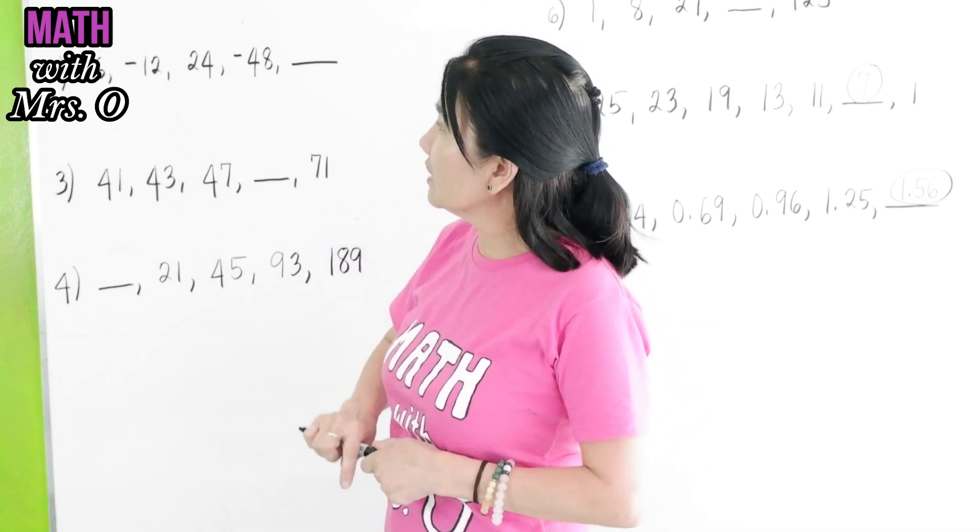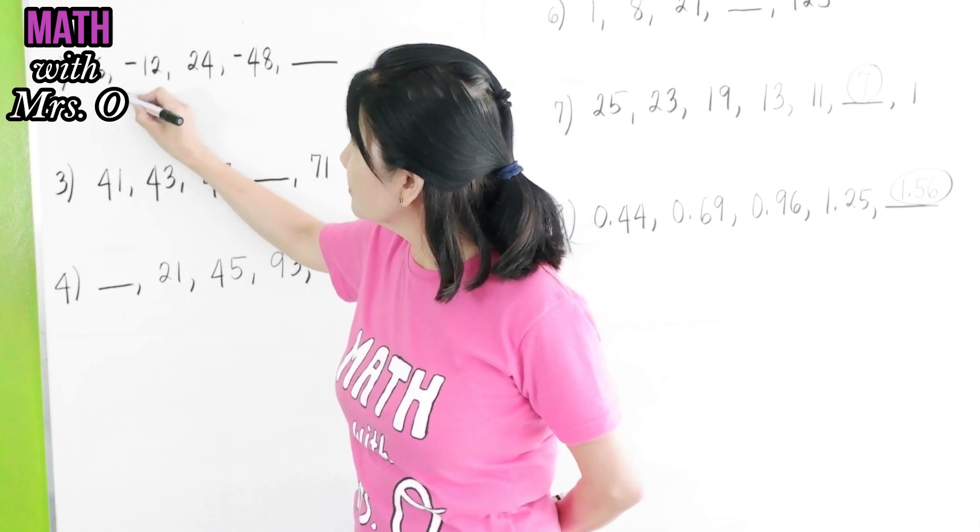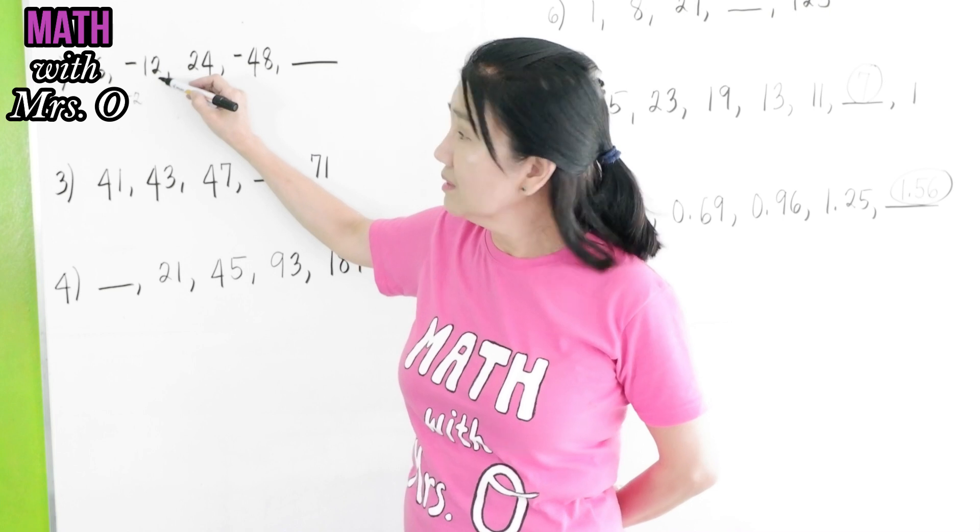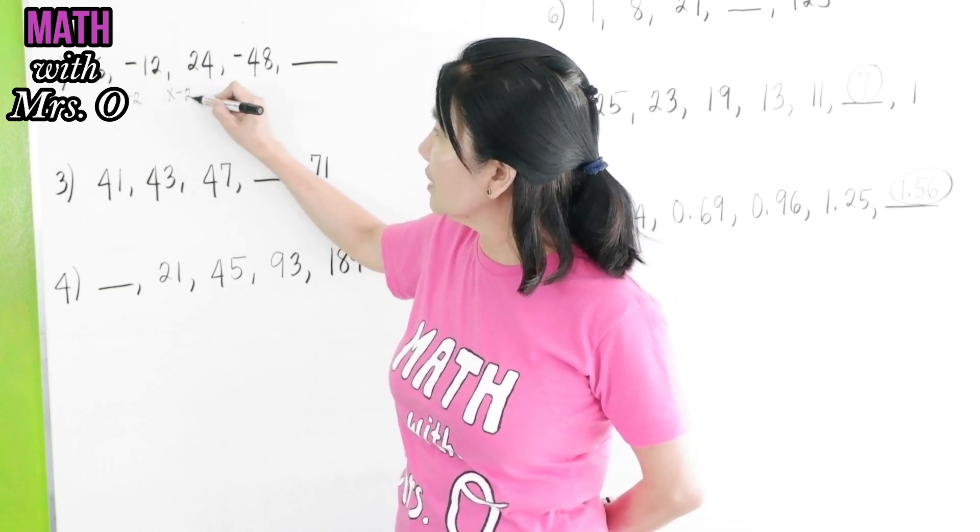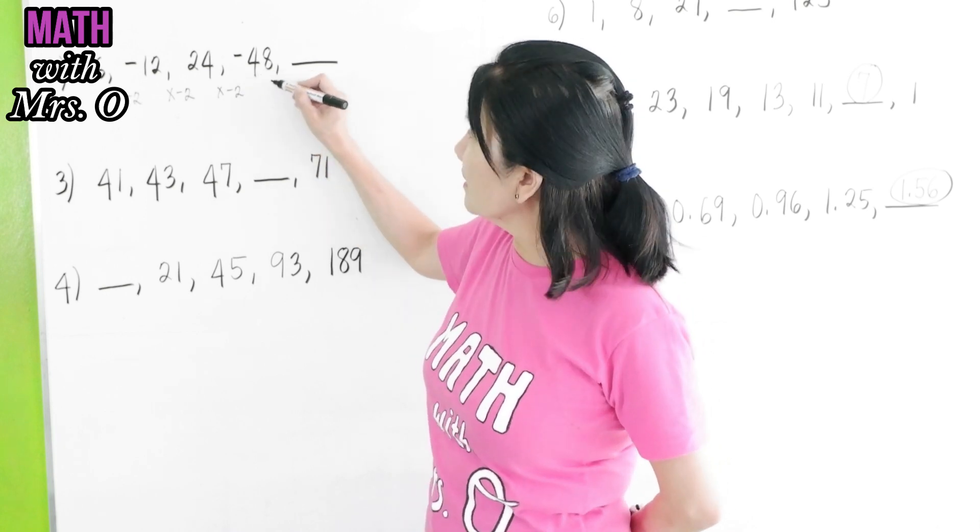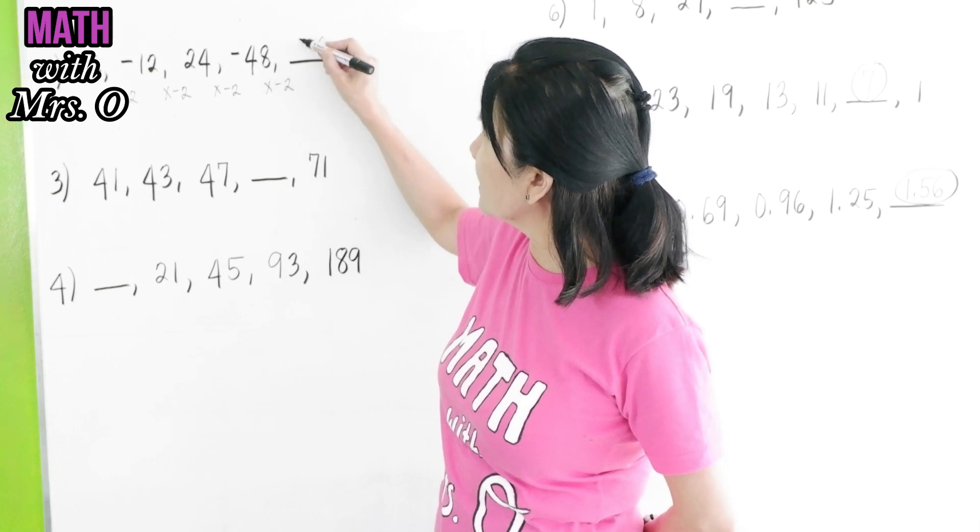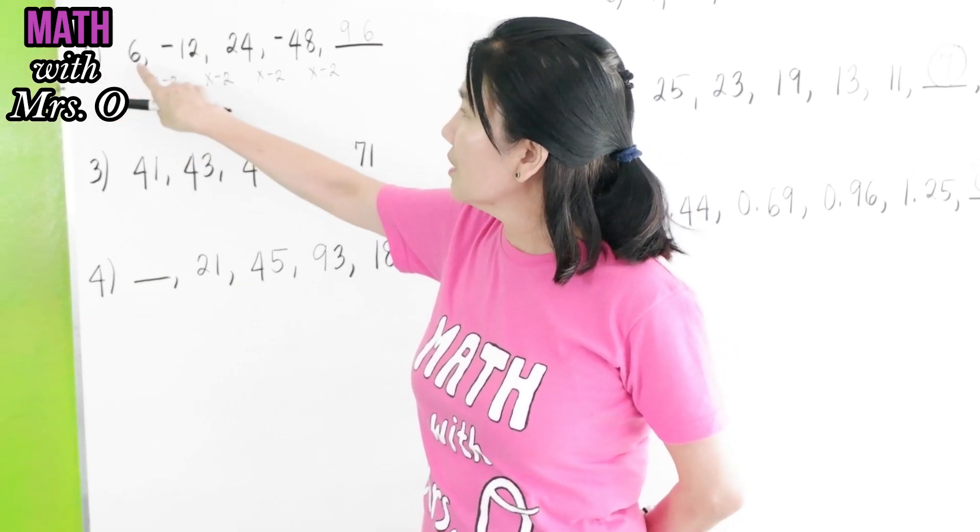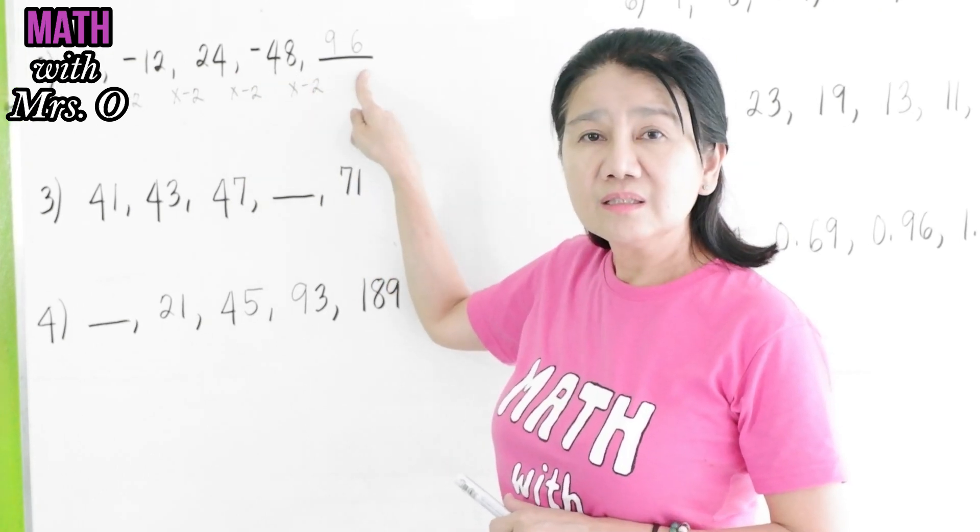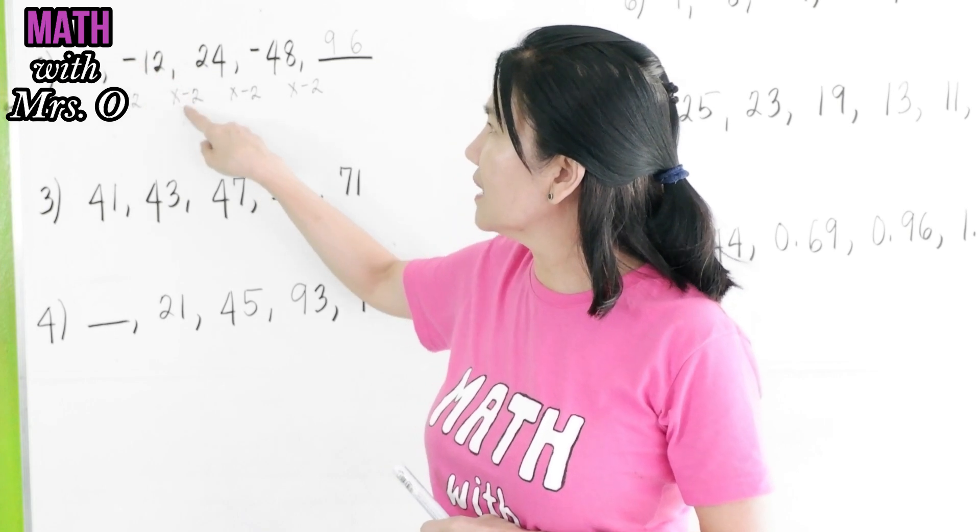Let's see what was multiplied to 6. You multiply this by negative 2. 6 times negative 2 will give you negative 12. Negative 12 times negative 2 will give you positive 24. Positive 24 times negative 2 gives you negative 48. And negative 48 times negative 2 gives you positive 96. If you have plus, minus, plus, minus, plus, it would mean that you are to multiply a negative number. Because positive times negative is negative, and negative times negative is positive.